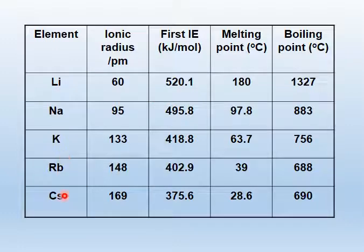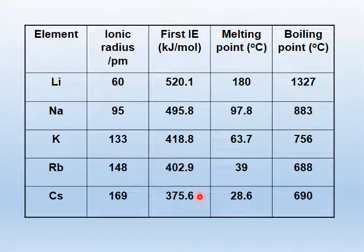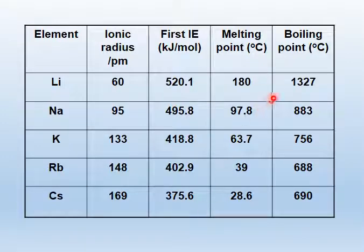Looking at this diagram — from lithium to cesium going down the group, the size of the atom increases and the ionization energy decreases. As explained, the distance between the nucleus and the valence electron of the atom increases further away, so attraction becomes weaker. That's why ionization energy decreases going down the group, and thus the melting and boiling point of the atom also decrease.